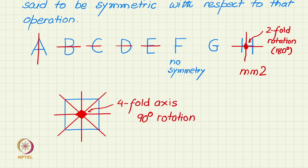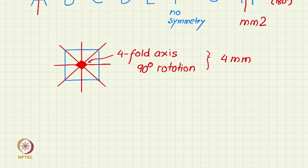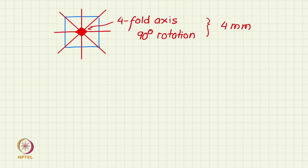And this kind of symmetry also is given a name, which I just give you here. This is called a 4mm symmetry: 4 for the four-fold in the center, and mm represents these mirror planes.